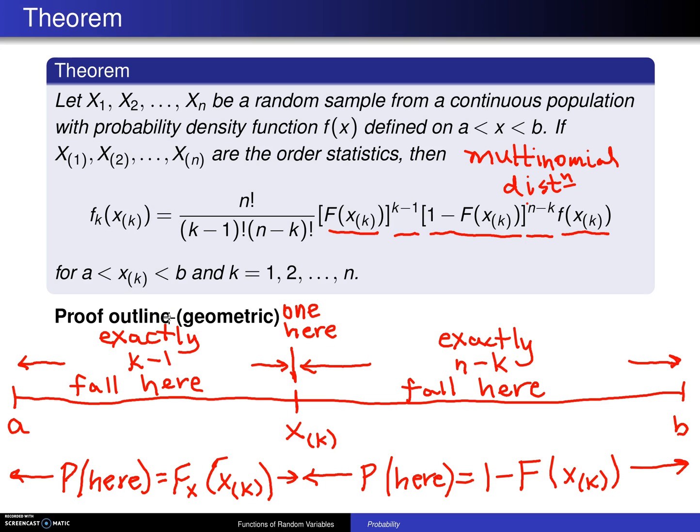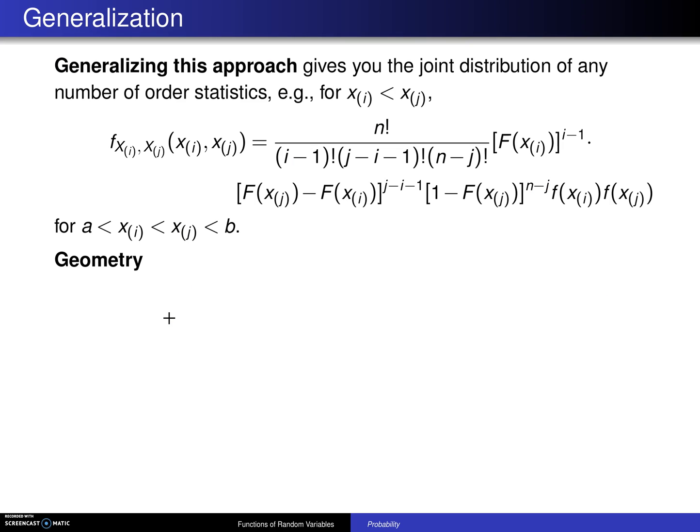Now, fortunately, this result generalizes to, for example, looking at two-order statistics at a time. Here is xi and xj where the subscript i is less than the subscript j, and that means x sub i will be less than x sub j.